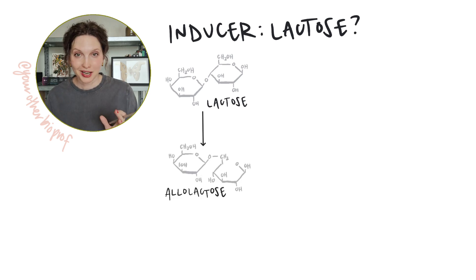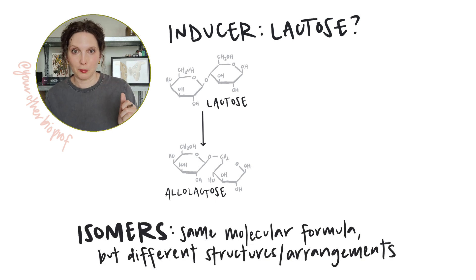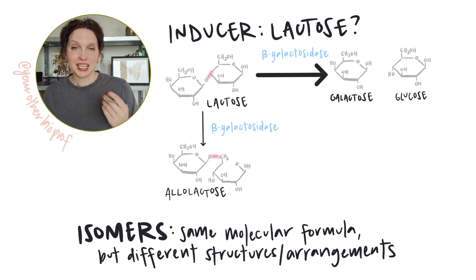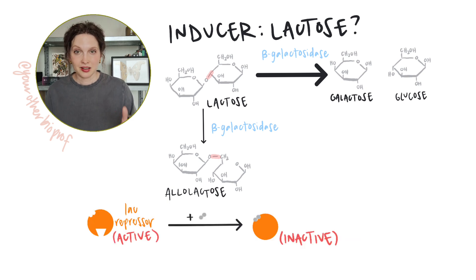All right, so technically the natural inducer is not lactose, but allolactose. Allolactose is derived from lactose. It's an isomer of lactose. You're just switching up that little bond. This is the other thing that beta-galactosidase does. So when lactose enters the cell, a small portion of that will be converted by beta-galactosidase into allolactose. That allolactose is going to bind quite nicely to the lac repressor, inactivate it, free up that operator, and get transcription going.